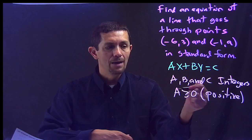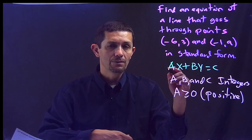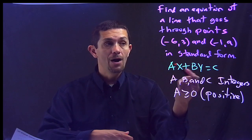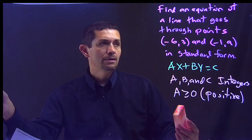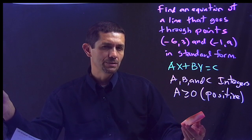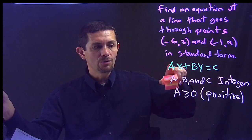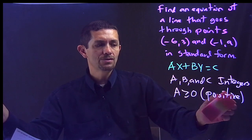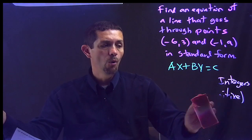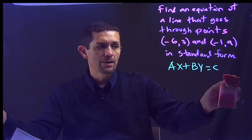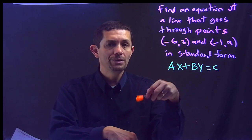Now I know where I'm going. I need integers, whole numbers, and the number from the x has to be positive. Standard form is not as simple as the slope-intercept form or the point-slope form, because there's no process that goes straight to standard form. To get to standard form, you basically go through point-slope form, or in our case, we're going to get to standard form by going through slope-intercept form.